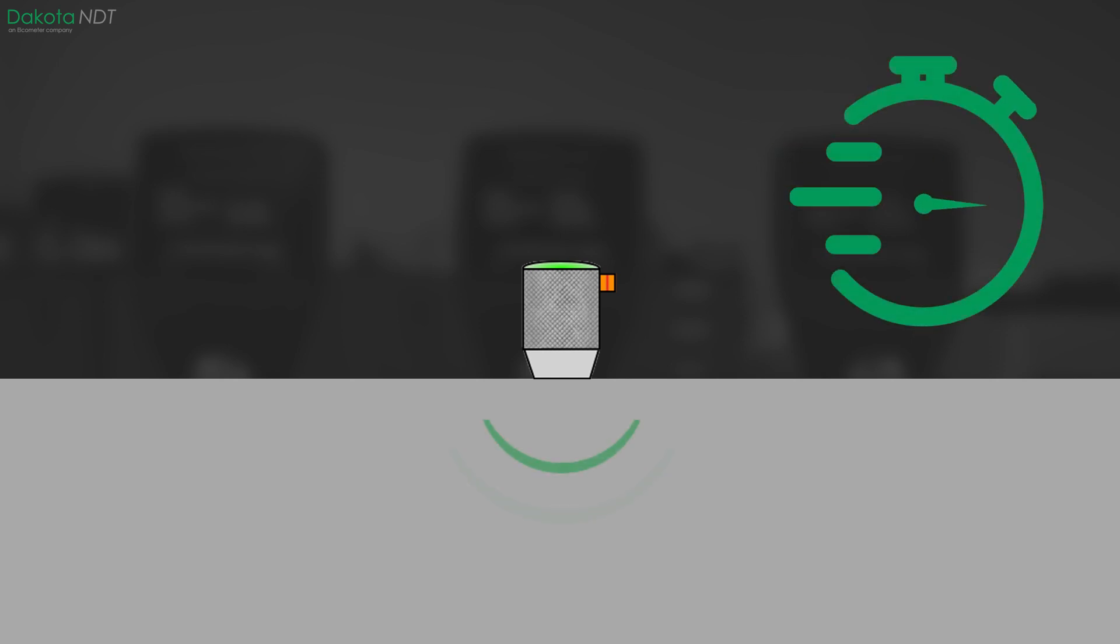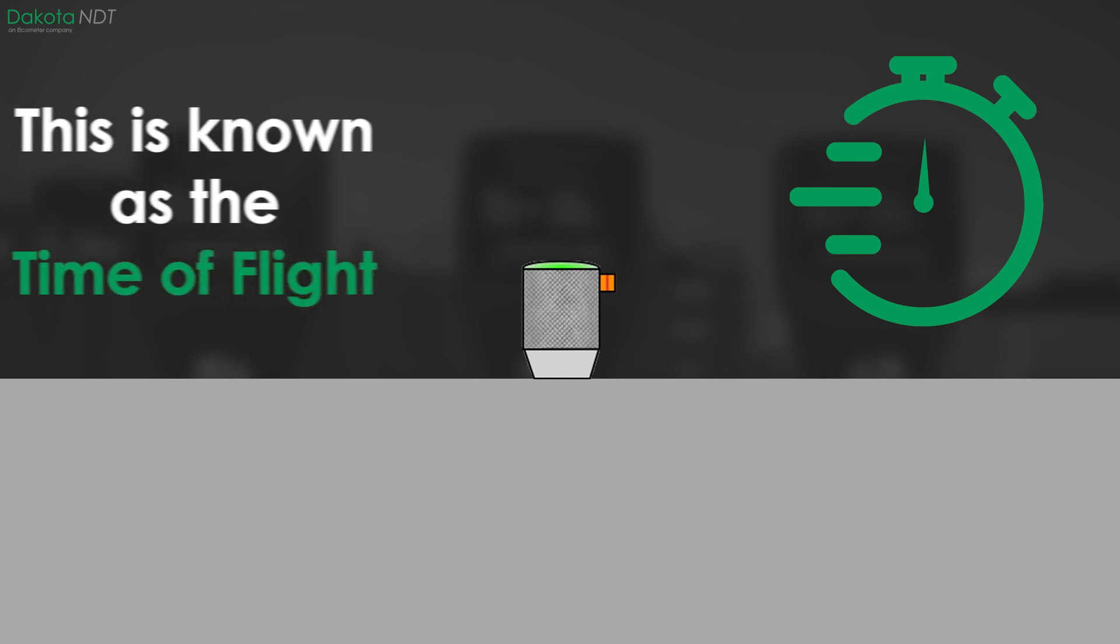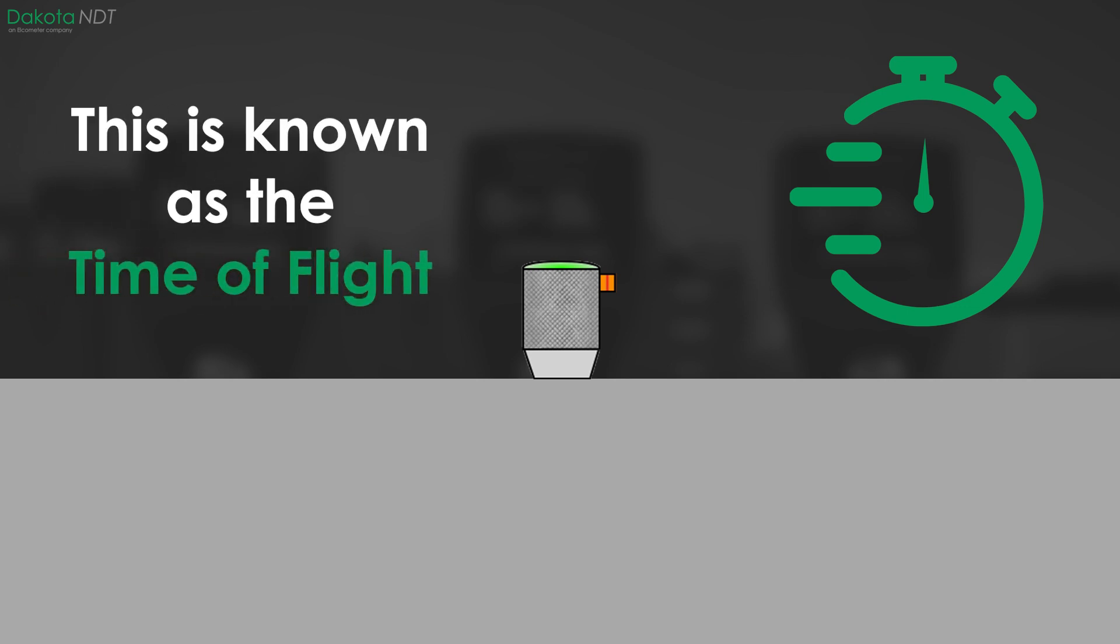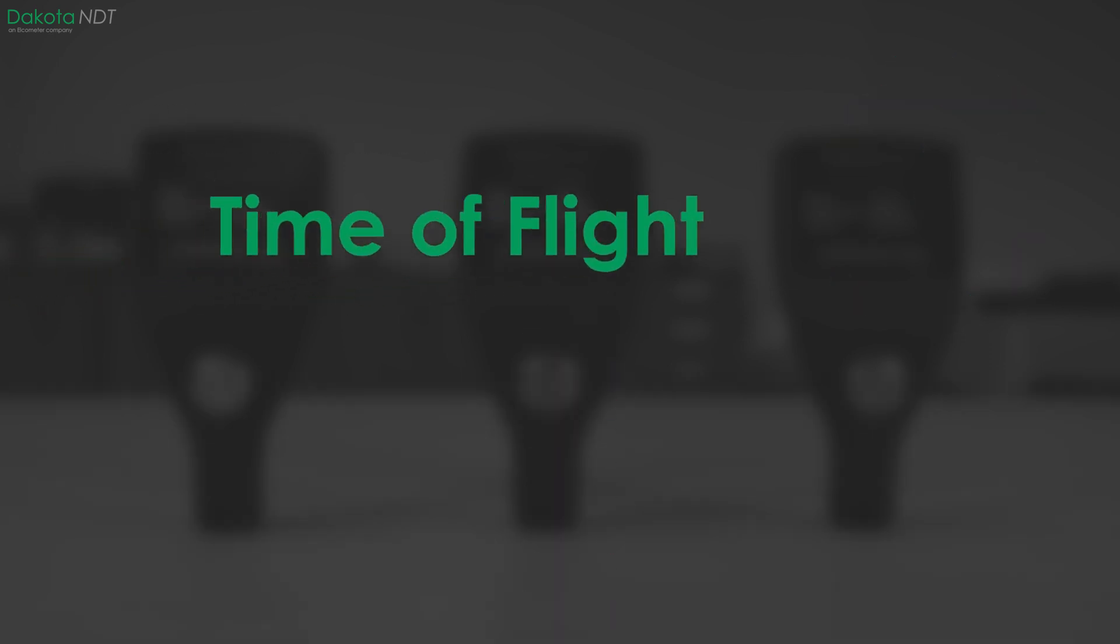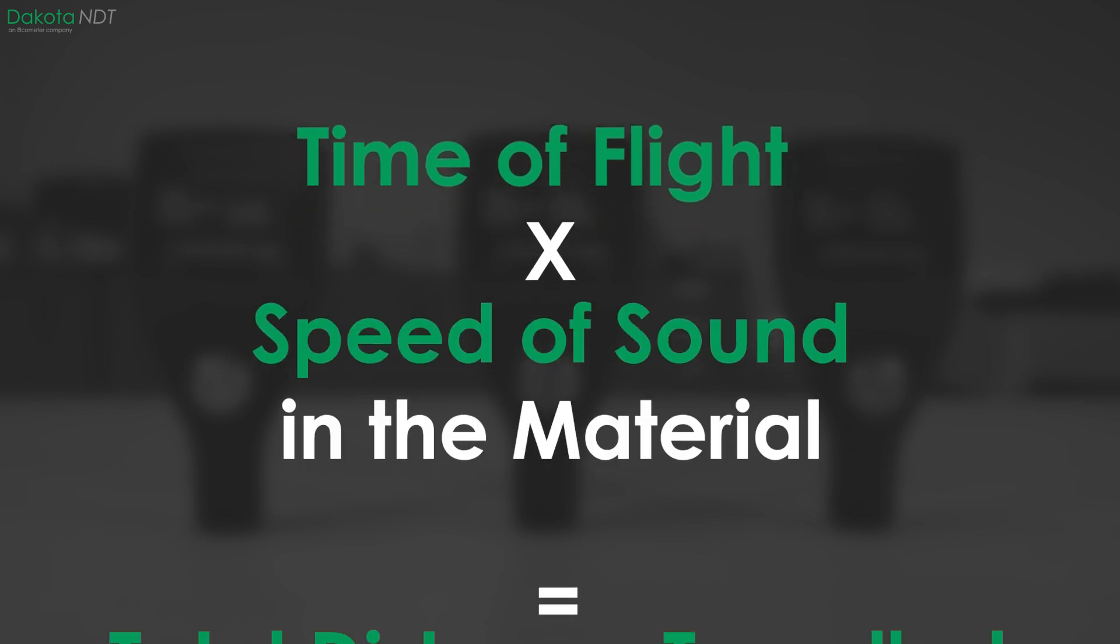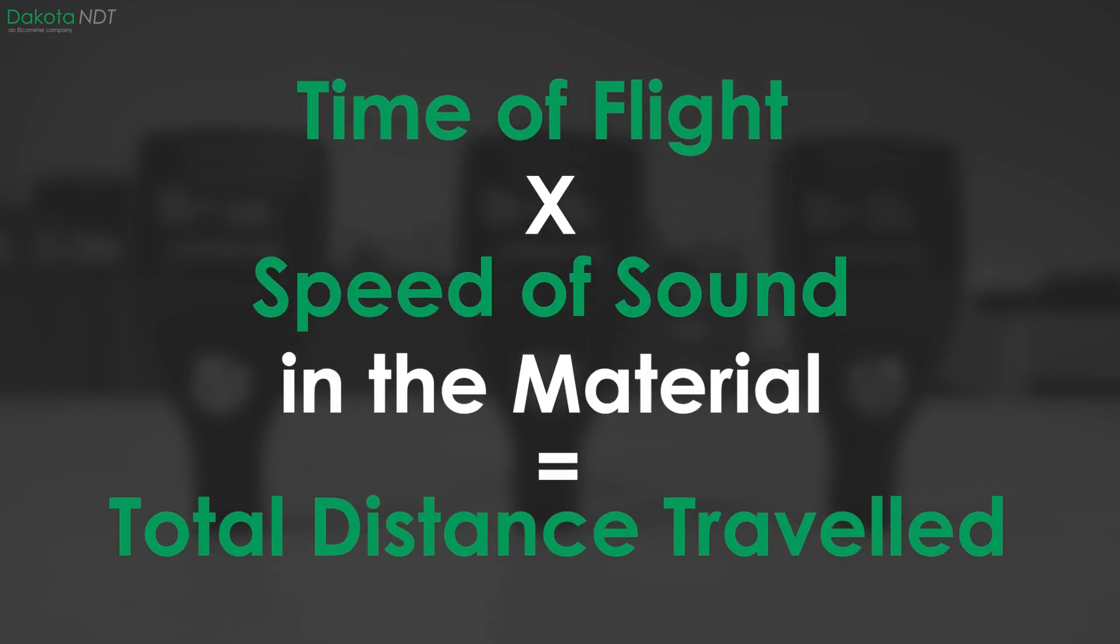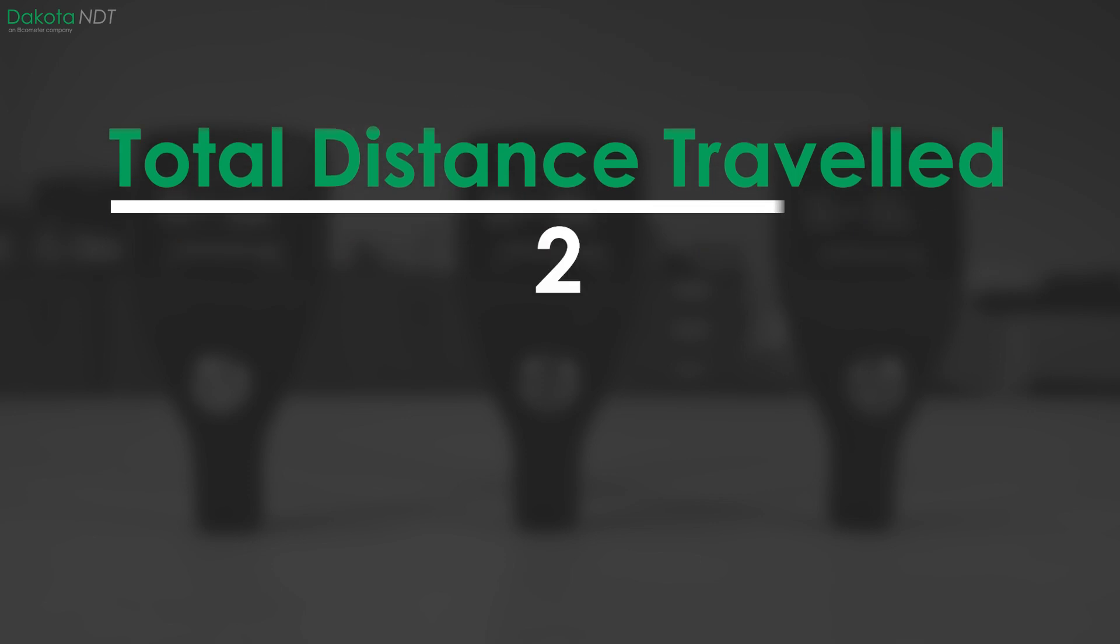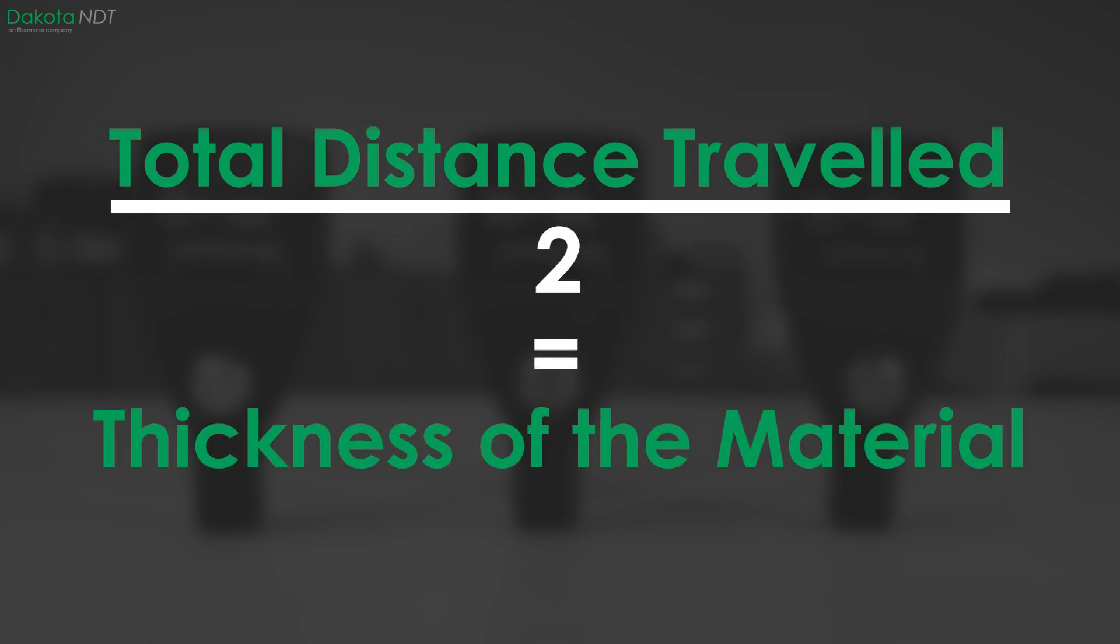We measure the time it takes for the pulse to be sent and the echo to be received, also known as the time of flight. This time is then multiplied by the speed of sound in the material to calculate the total distance traveled. The thickness of the material is half of this distance.